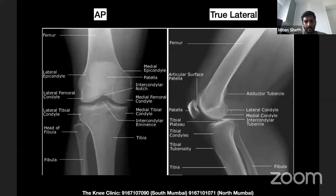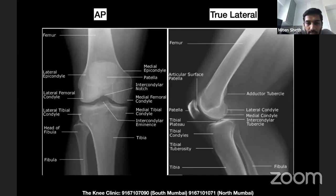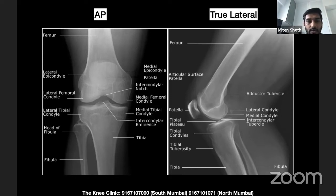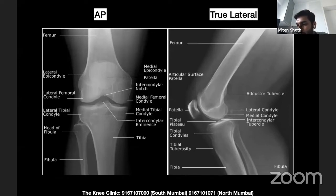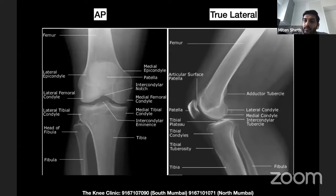A true AP radiograph means the patella is facing forwards in the center, and the fibula is bisected by the tibia — the fibular head traces in line with the lateral tibial plateau cortex. On the lateral side, a horizontal beam or cross-table lateral should show overlap of the femoral condyles, which is the most important thing to see. Good femoral condylar overlap also allows you to see the marginal patellofemoral space, confirming it is a good lateral X-ray.